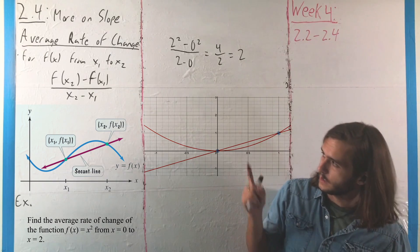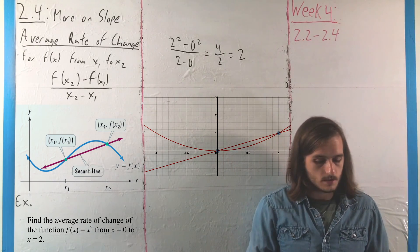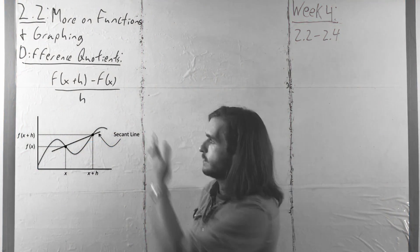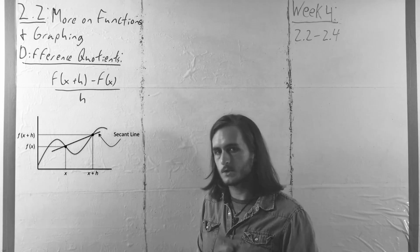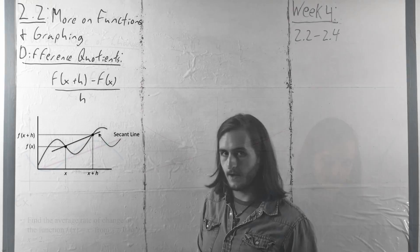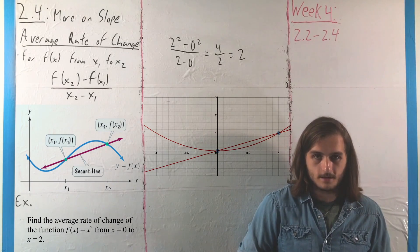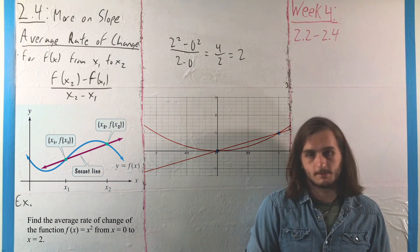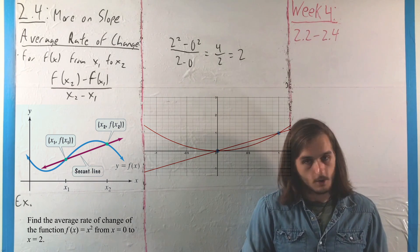We could instead look at something like that using our difference quotient formula, as we would instead have f(x + h) - f(x) over x + h - x, which would just end up being the difference quotient formula f(x + h) - f(x) over h, as we saw a little while ago.